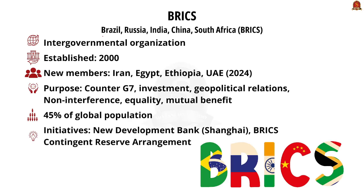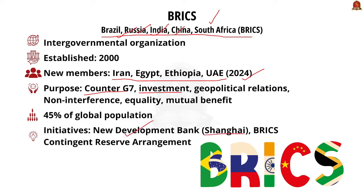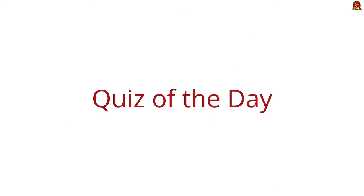BRICS is an acronym for Brazil, Russia, India, China, and South Africa. The founding members — Brazil, Russia, India, and China — formed the group in 2006; South Africa joined in 2010. Iran, Egypt, Ethiopia, and the UAE joined in 2024. BRICS aims to establish a counter-organization to the G7 and promote geopolitical and bilateral relations. Key initiatives include the New Development Bank, headquartered in Shanghai, and the BRICS Contingent Reserve Arrangement.